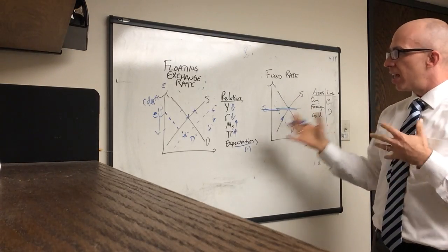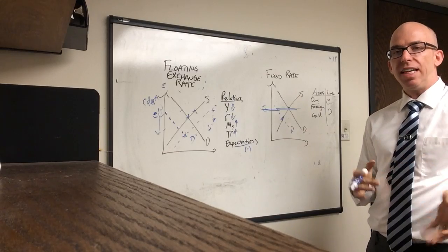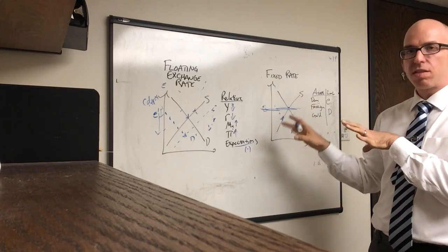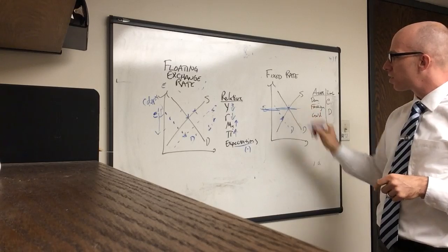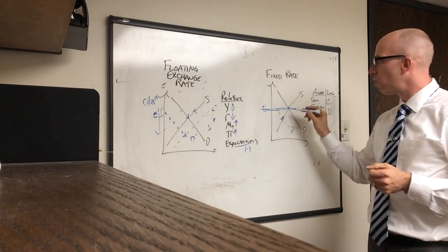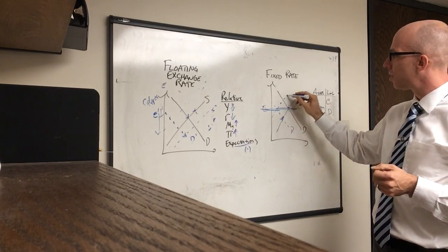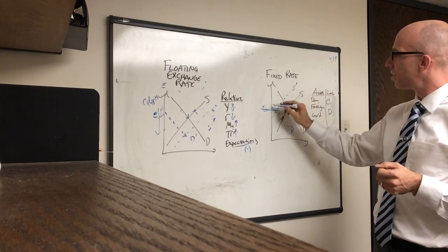Now, in higher-level classes I use an equation called interest rate parity. I usually don't use this model, but the way you could show this pretty simply is to say that if this currency wants to fall because of market forces, the central bank will actually buy up its currency, supplying less.